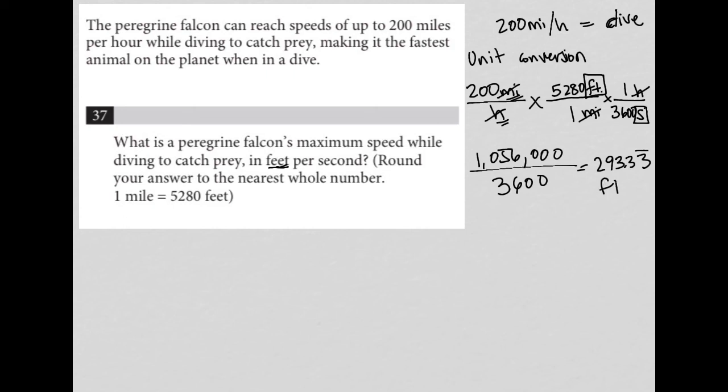So I'm going to divide that 1,056,000 by 3,600. And what I get is 293.3 with a bar over it. And again, that is feet per second. The question wants me to round to the nearest whole number. So my answer here will be 293.